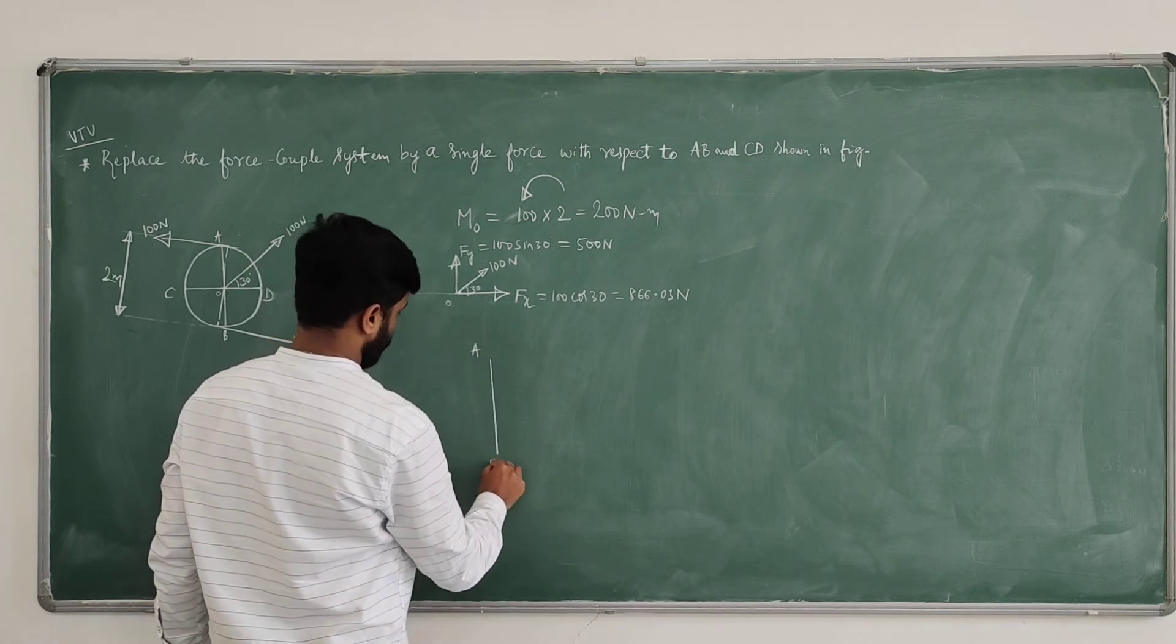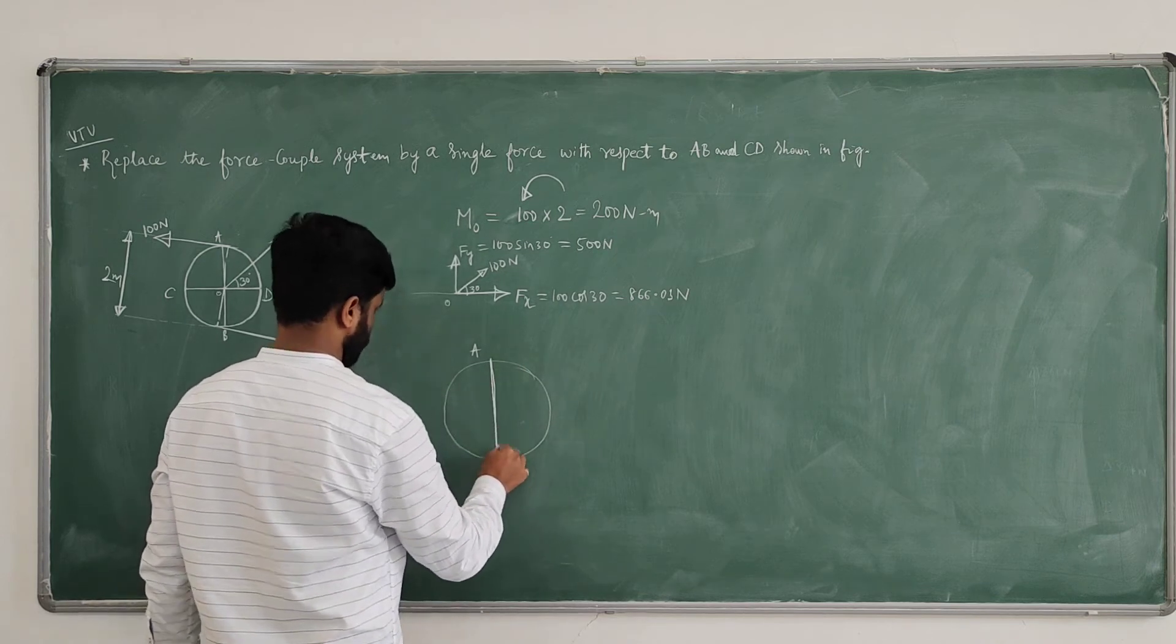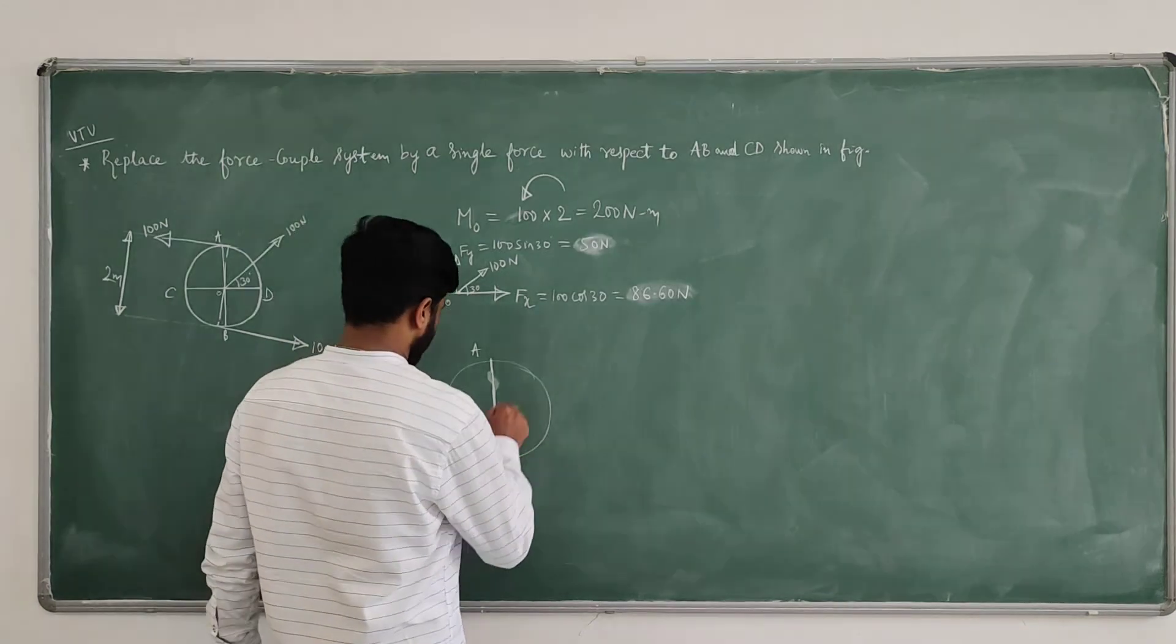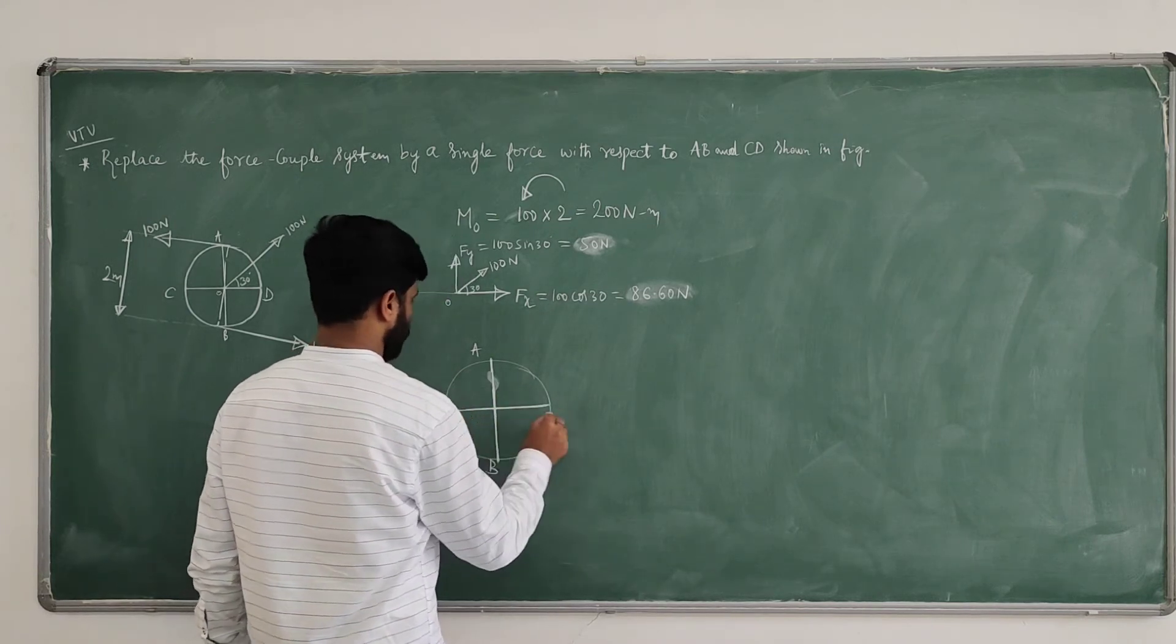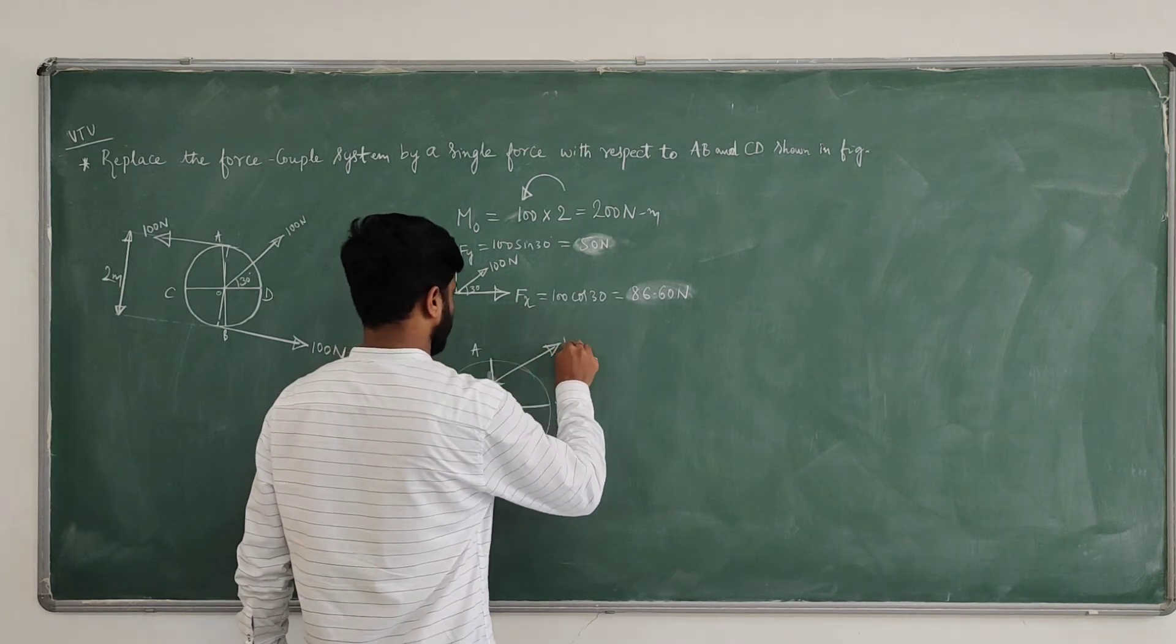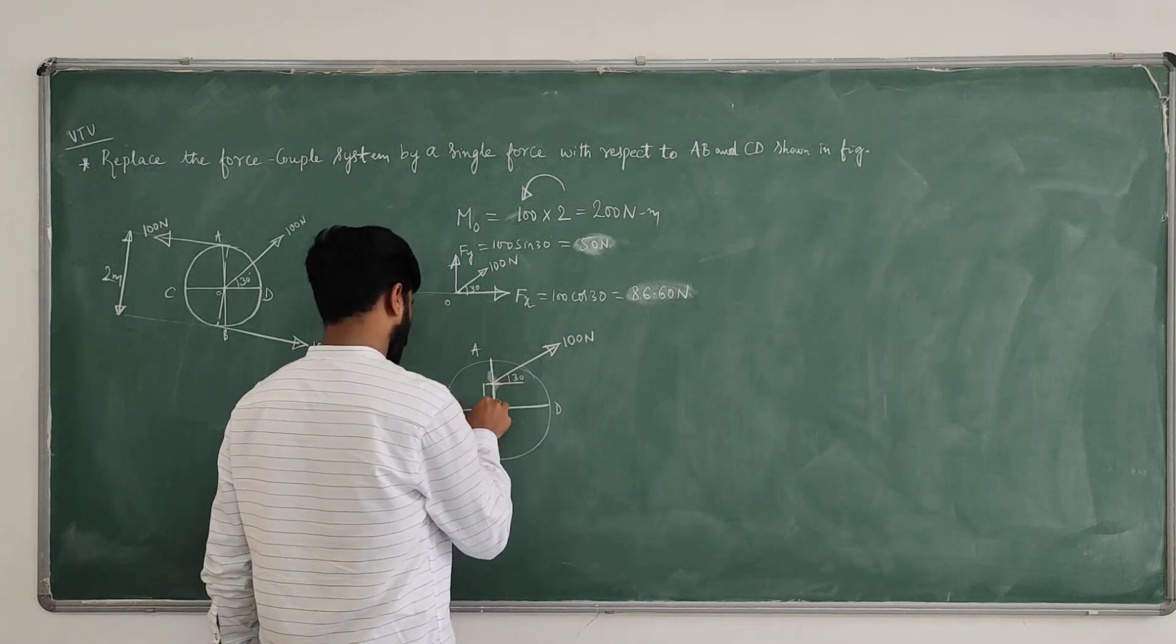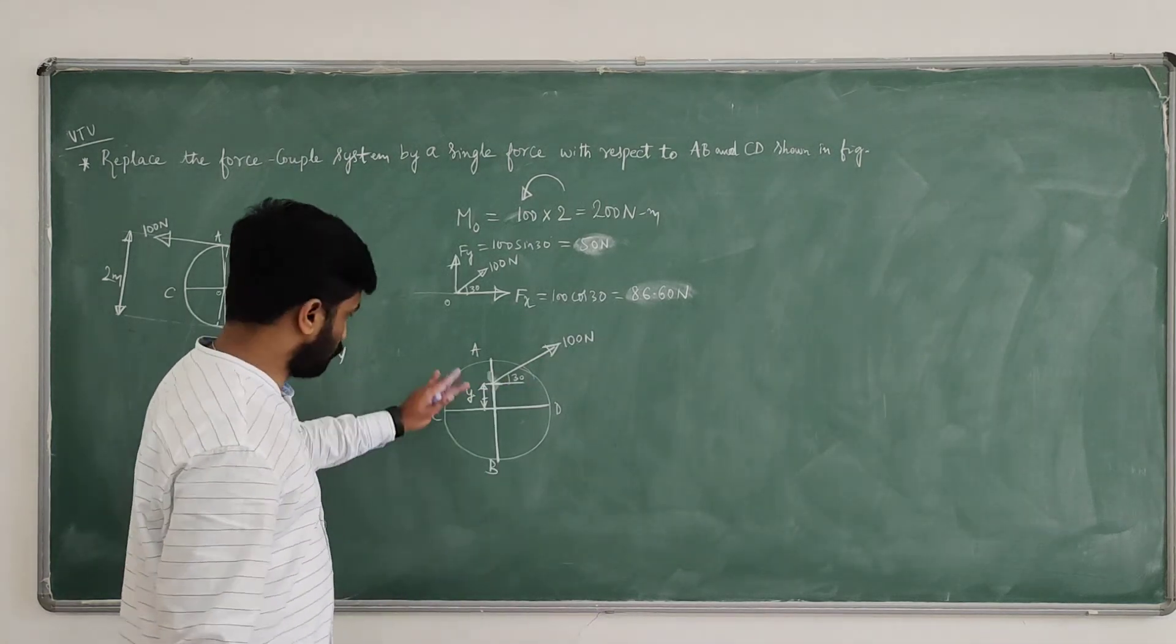Say AB. This is CD. Now, I am determining this value. Here I am taking this 100 newton effect, 100 newton. And this is 30 degrees. Single force. I want to determine this Y distance, Y. This is for AB.